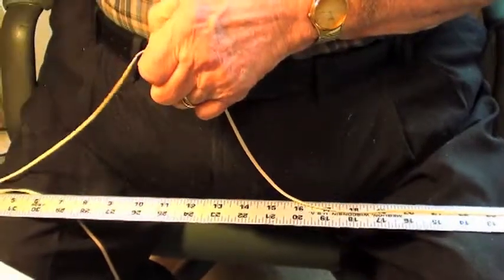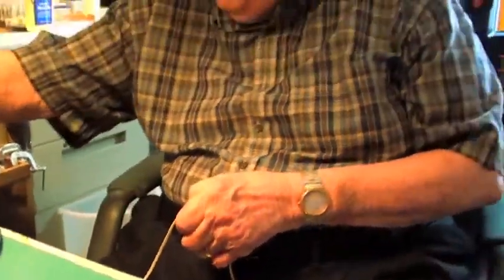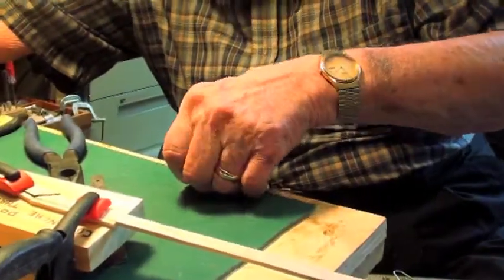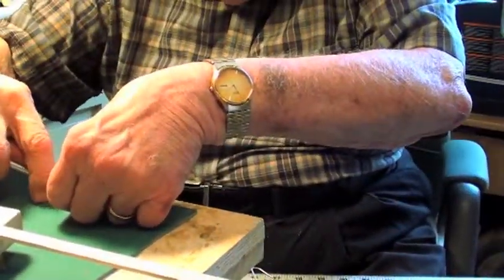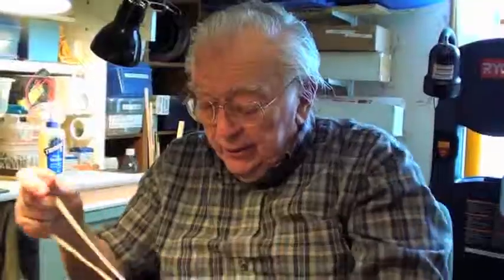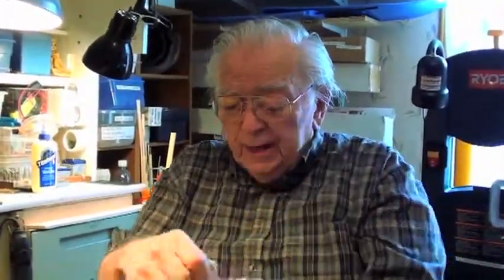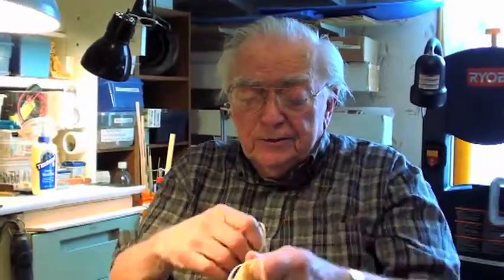I start out with a piece 29 inches long. I usually make these a dozen or two at a time. Rubber has to be protected from sunlight and ultraviolet, so if you do something like this, just make sure that you keep it in the box.